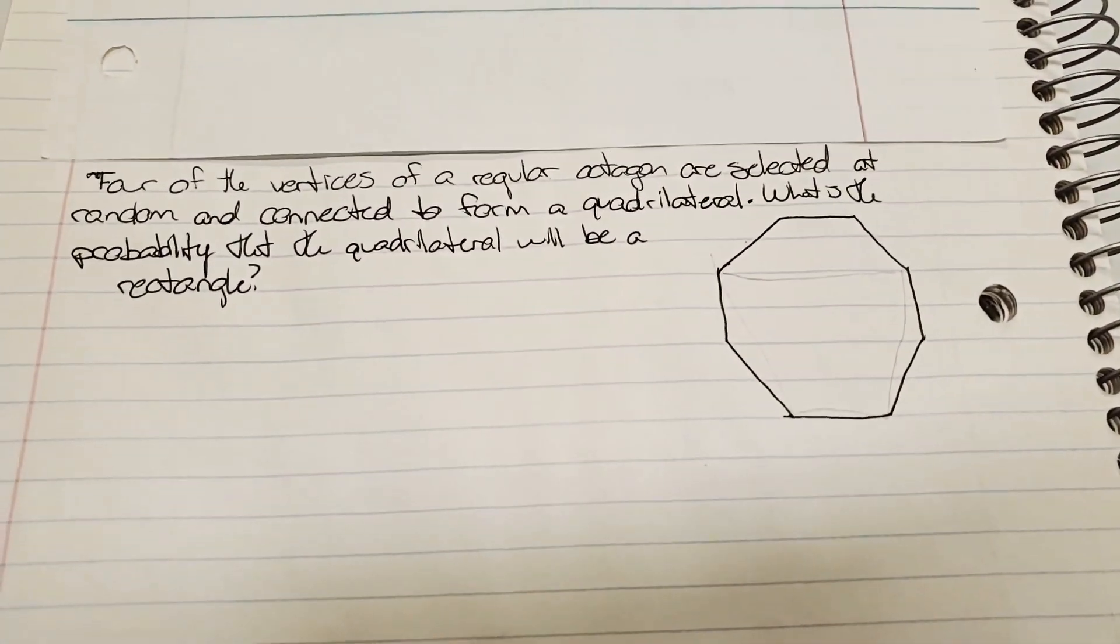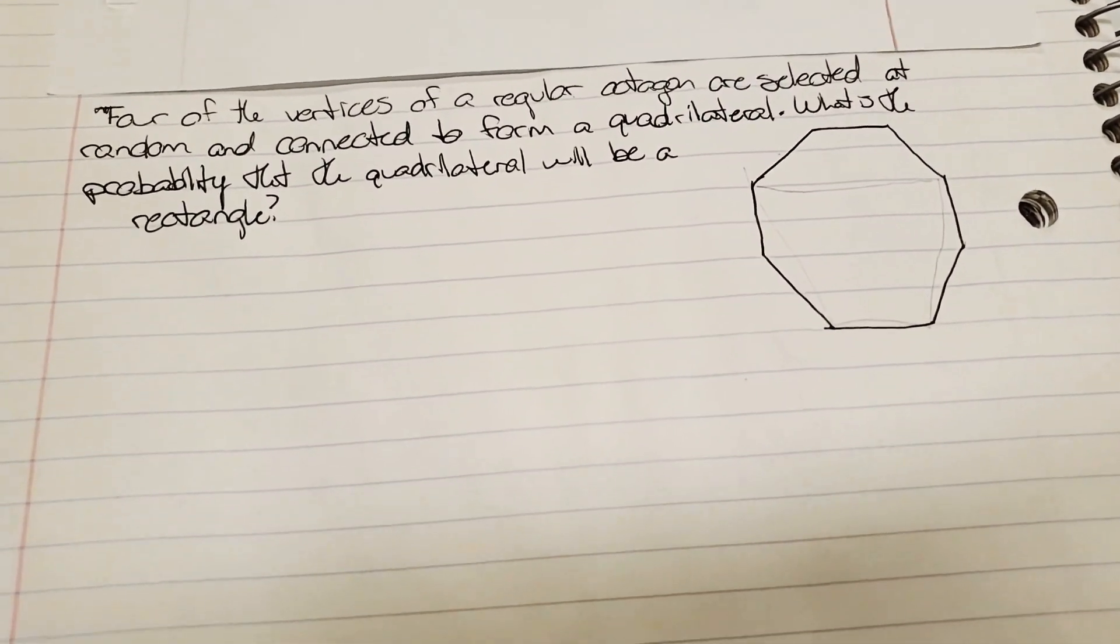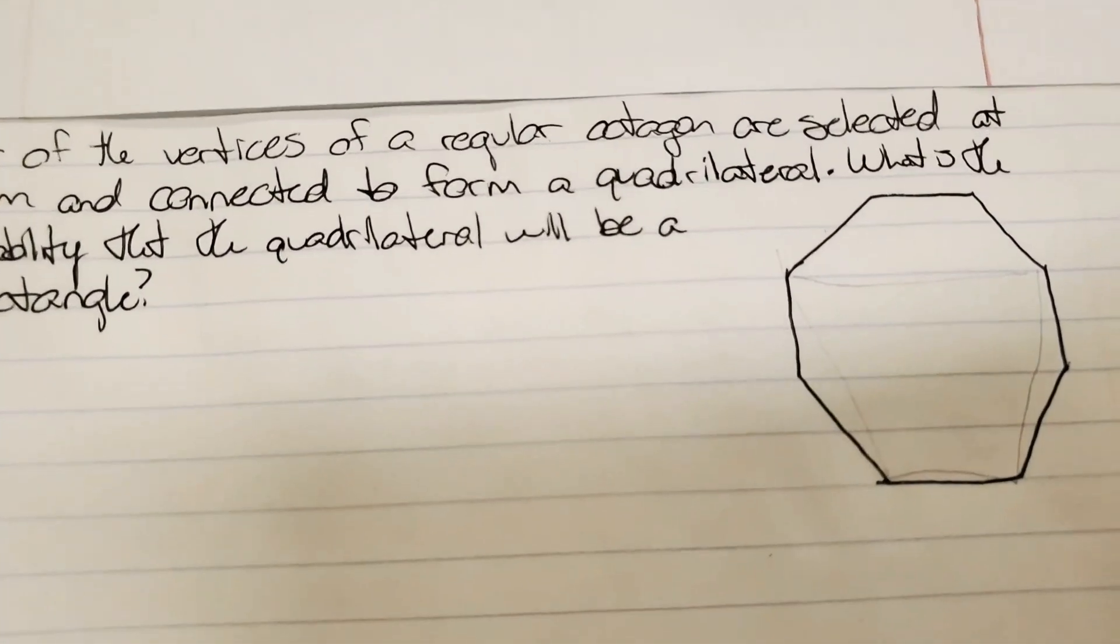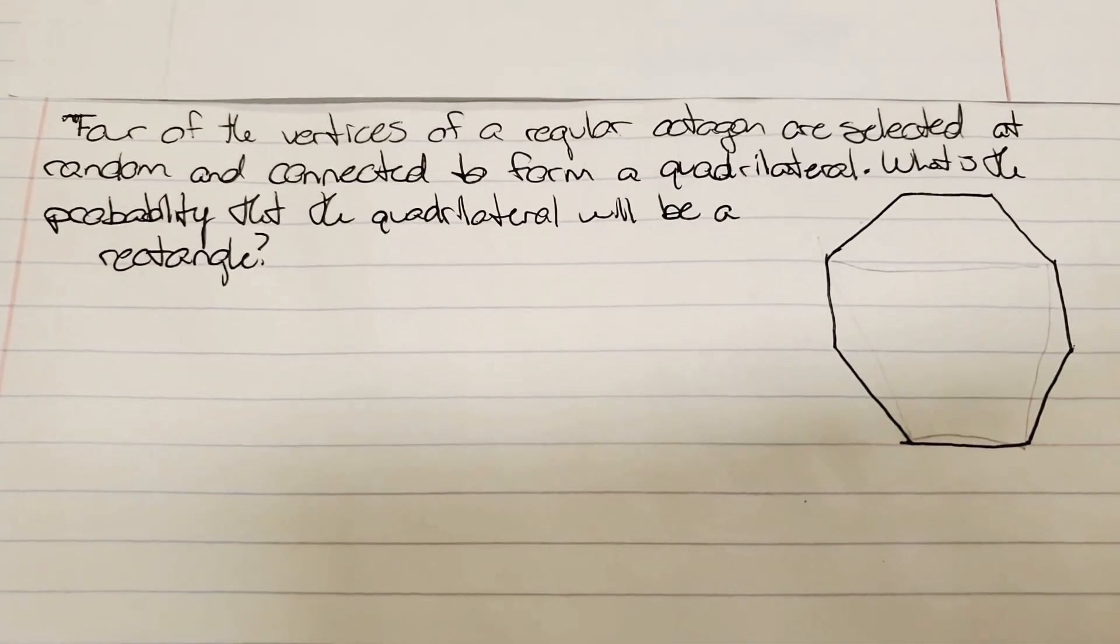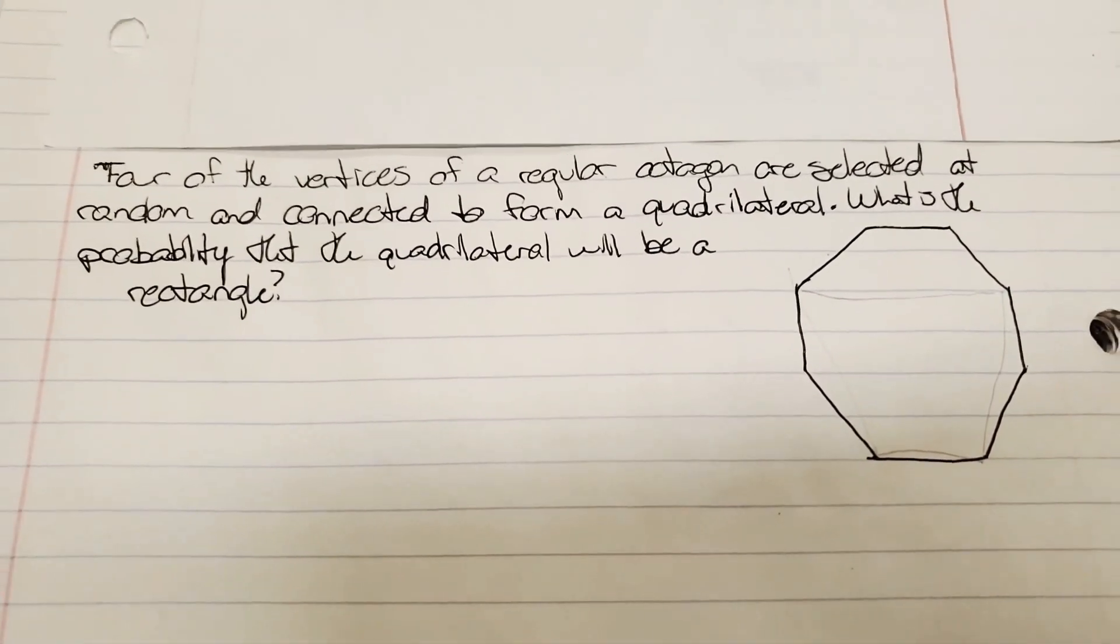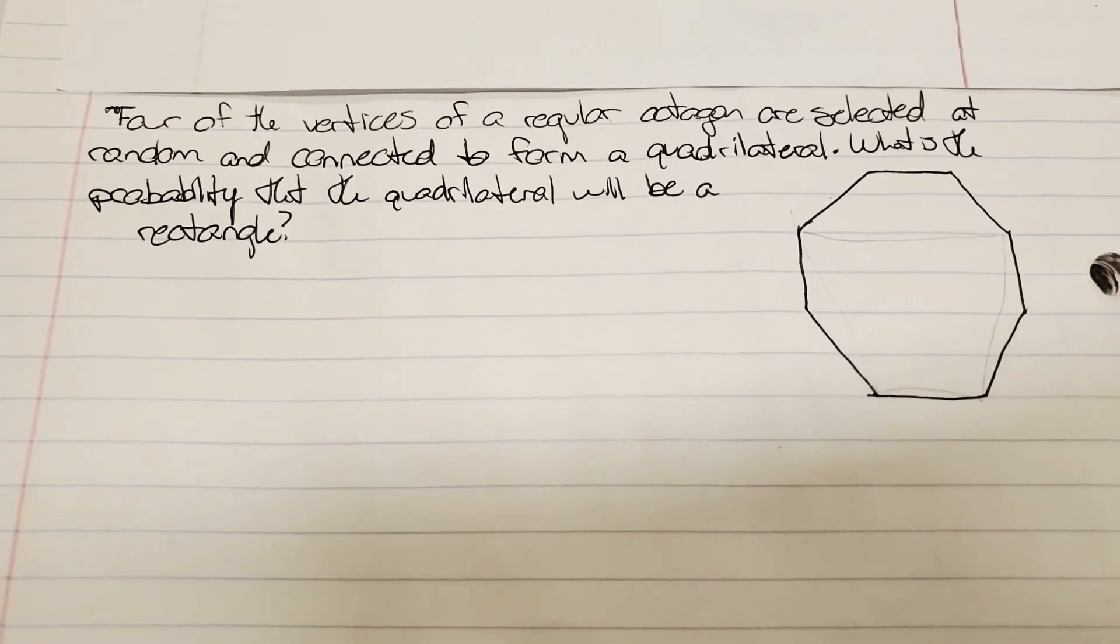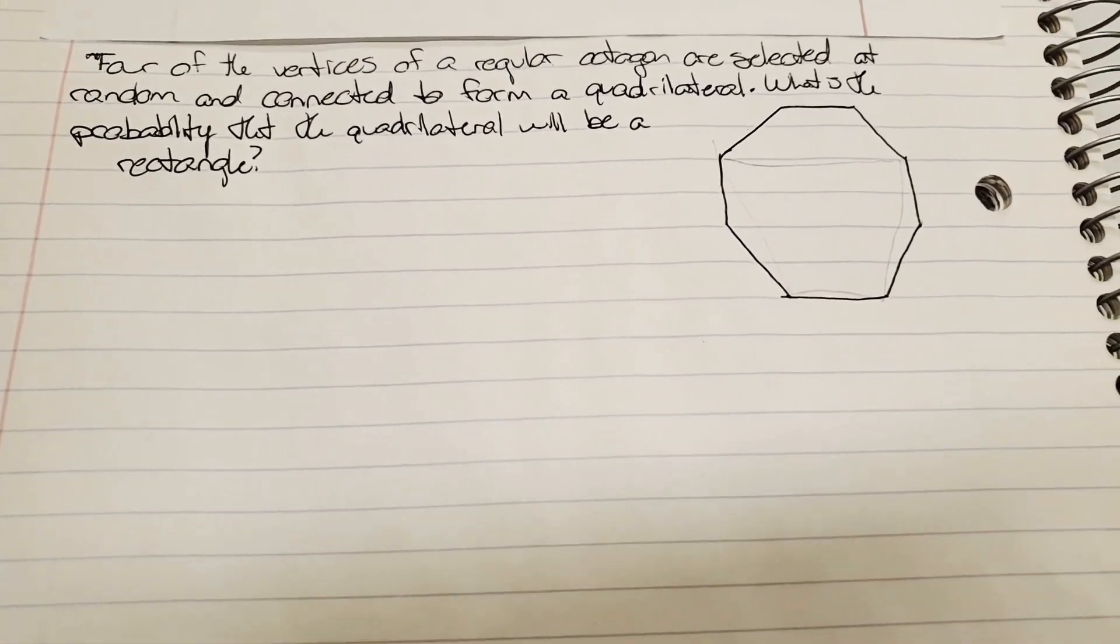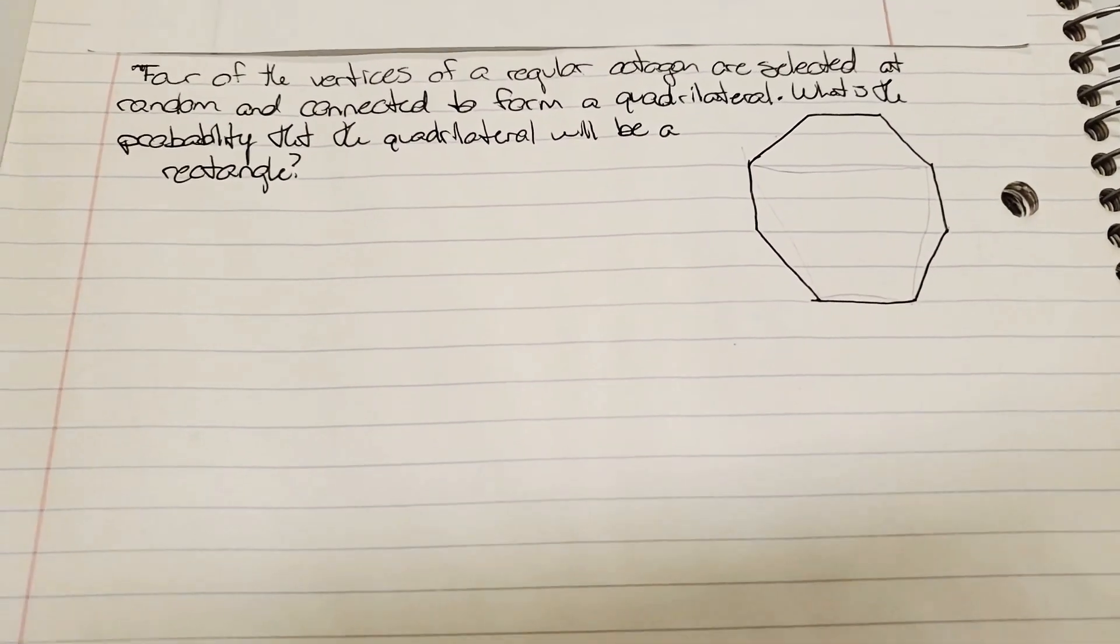So, again, we're going to have our denominator and numerator. The denominator will be the ways to select four of the eight vertices, and the numerator will be the way that when the four are connected, they form a rectangle.